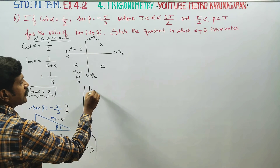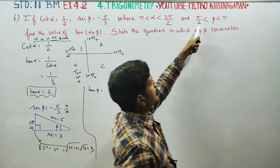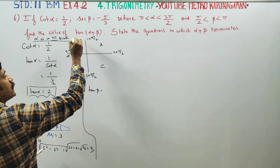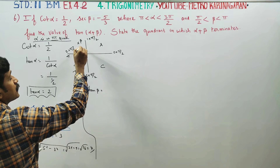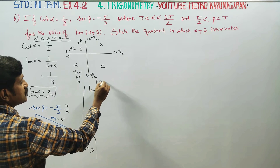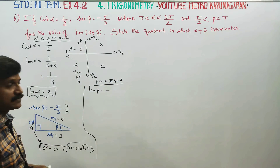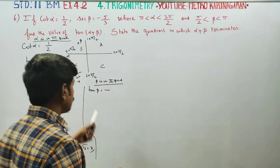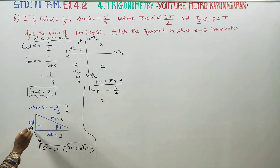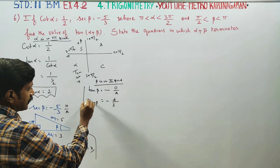Now, what is tan β? Since β is in the second quadrant, sine is positive but tan is negative. Tan β is opposite by adjacent. Opposite is 4, adjacent is 3, so tan β is minus 4 by 3.